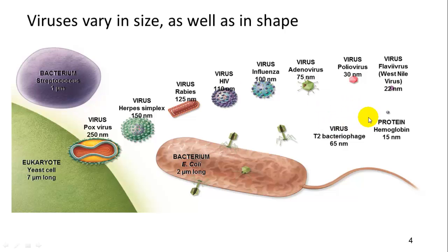Viruses come in many different sizes, but are generally always larger than our macromolecules — such as a large protein like hemoglobin — but are approaching the same size as some of our smallest bacteria, though still about a fourth of the size of the biggest ones.